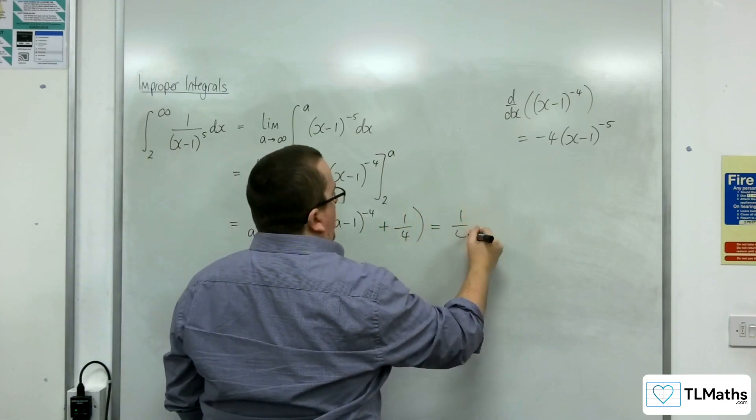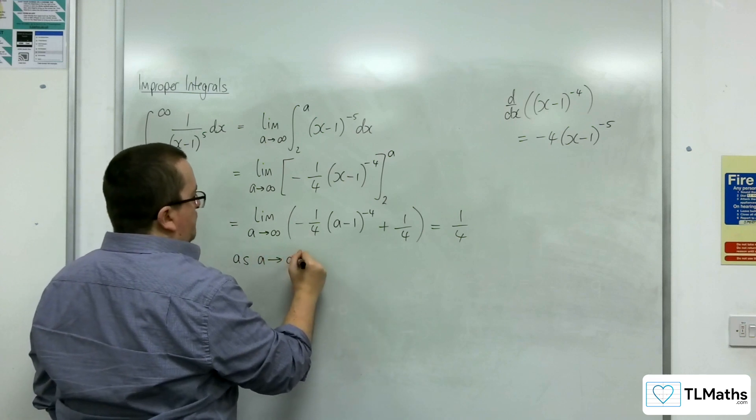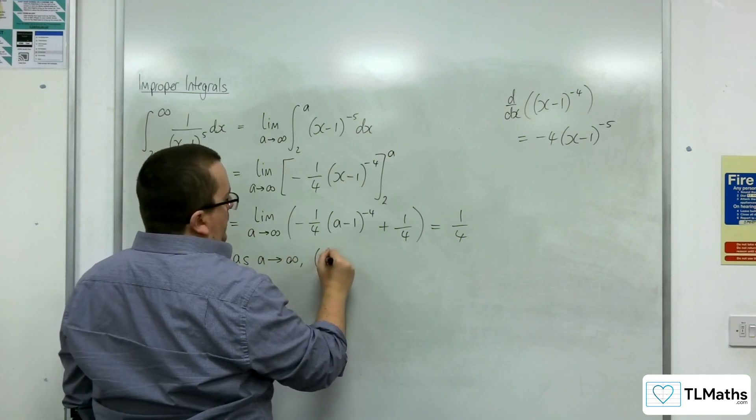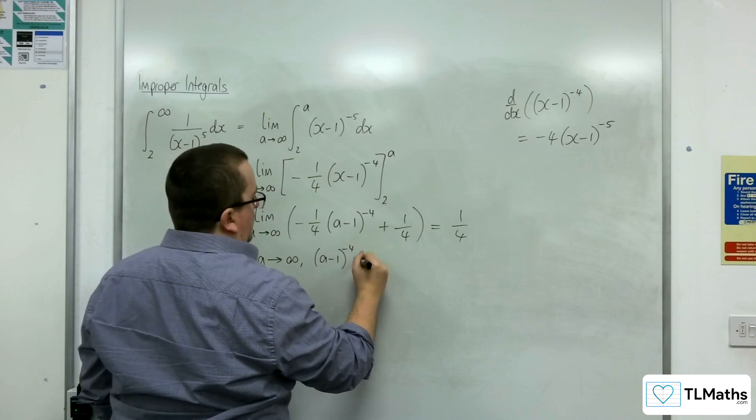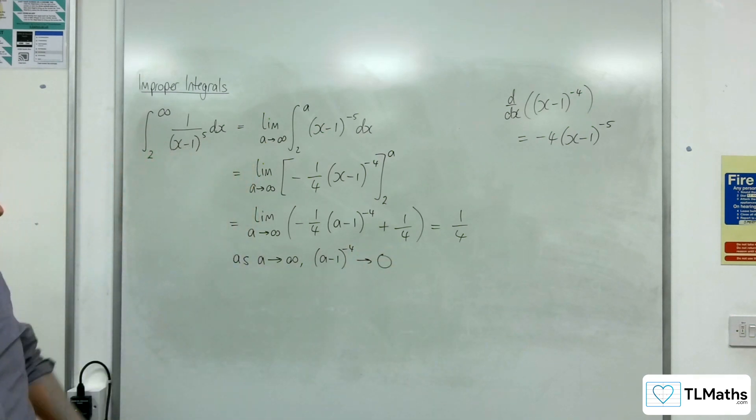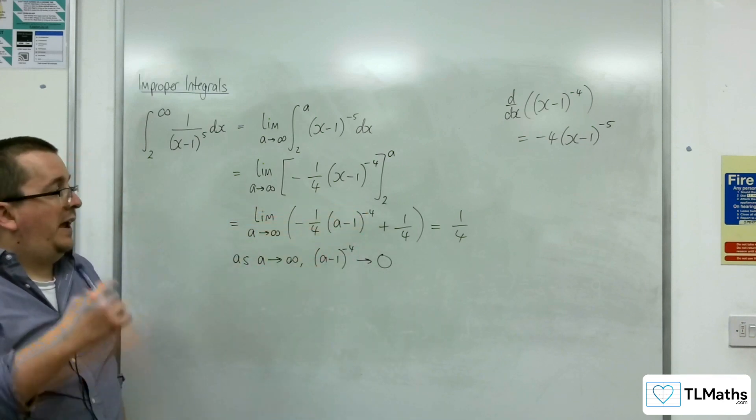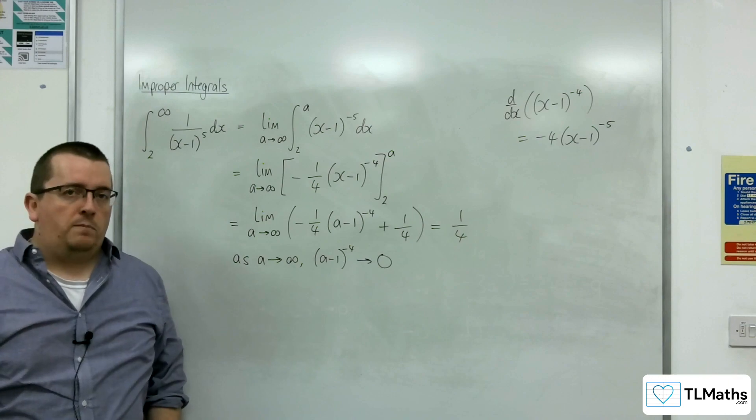And this is going to be equal to 1 quarter, because as A tends to infinity, (A minus 1) to the minus 4 will tend to 0. So that term will tend to 0, and I'll be left with 1 quarter. And so that's how we can evaluate this improper integral.